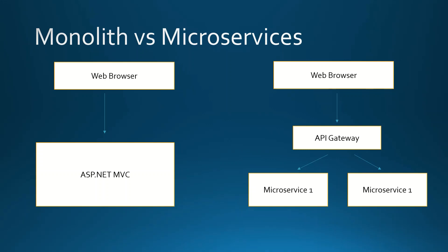Let's start by comparing the traditional architecture, which is named monolith, to the microservices architecture. Monolithic architecture is for example used in ASP.NET MVC, where we have the user using a web browser to send requests to the ASP.NET MVC process.